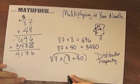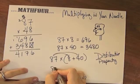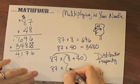So that's how you multiply in your noodle. Now notice you can also do 87 times 50 minus 2.